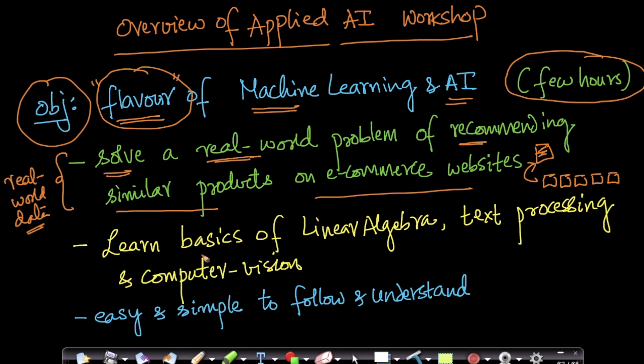In this workshop, you'll learn some very basics of linear algebra, which is a sub-area of applied mathematics used extensively in machine learning. You'll learn a bit about how to process and use text for finding similar products, and we'll also use some concepts from computer vision. Computer vision is basically about using images in machine learning and artificial intelligence.